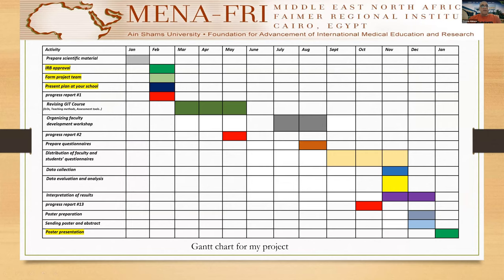This is my Gantt chart. Scientific material was prepared in January 2021. IRB approval with formation of the project team and presentation of the plan to my college was in February. The first progress report was submitted in February 2021. Then revising of GIT took place in March, April, and May 2021, with organizing a faculty development workshop in July and August. The second progress report was submitted in May 2021.